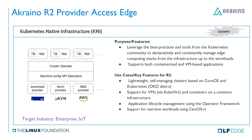KNI is led by Red Hat colleagues. The purpose is to leverage best practices and tools from the Kubernetes community and support both containerized and VM-based applications. OpenShift plays a critical role. The use cases include lightweight self-managing clusters based on CoreOS and Kubernetes, with PVMs supported, application lifecycle management using the operator framework, and support for real-time workloads using CentOS RT. This is very close to what we've done in Kubernetes — integrating everything.